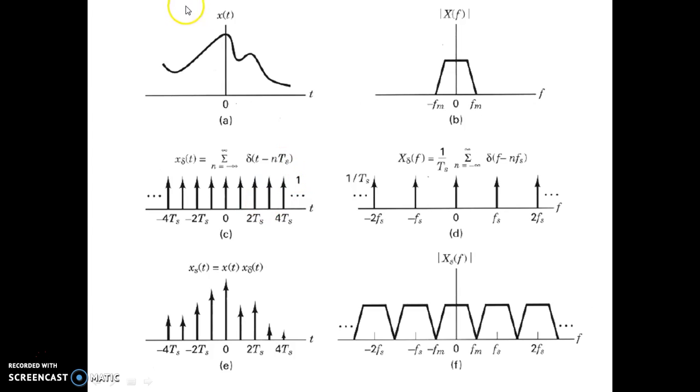This is the expression for a train of impulses. We are going to multiply x(t) with this train of impulses, and what do we get? xs(t), which is equal to x(t) into x_delta(t), which is again another train of impulses but modulated in amplitude by the value of x(t) at those instances where you have the delta functions.